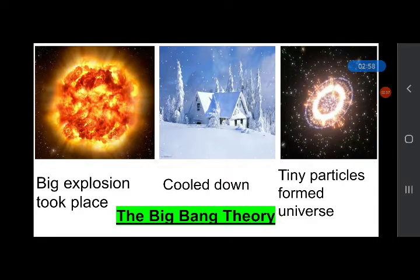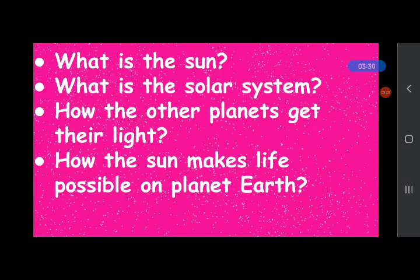At the edge of the Milky Way galaxy, there is the solar system. In solar system, there are eight planets, the sun, satellites of planets, and pieces of rocks and dust. Now answer these questions: What is the sun? What is the solar system? How do the other planets get their light? How does the sun make life possible on planet Earth?